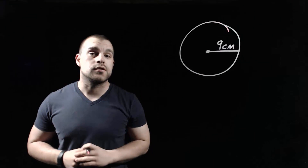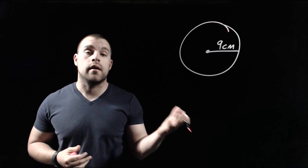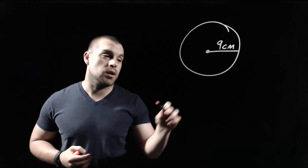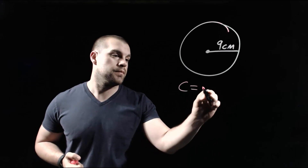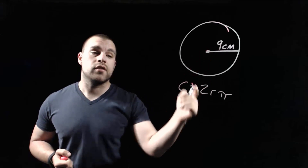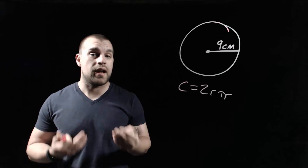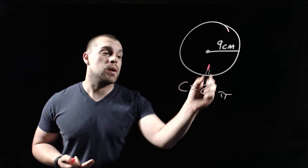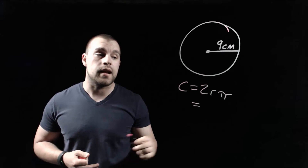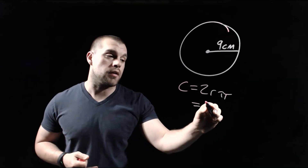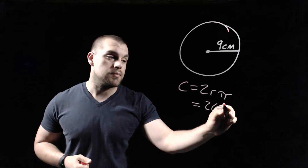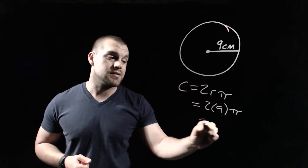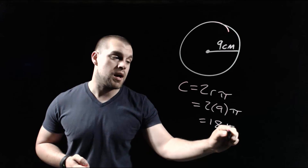In this example we're given a circle with a radius of nine centimeters. Since we're given a radius, I'm going to use the formula that has the radius included in it. Since we know the radius is nine, all we have to do is fill in that nine for our r value. So we're going to take two times nine times pi. Well, two times nine is 18, so we have 18 times pi.